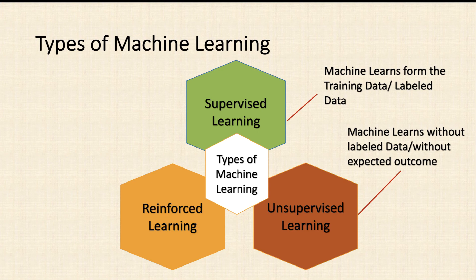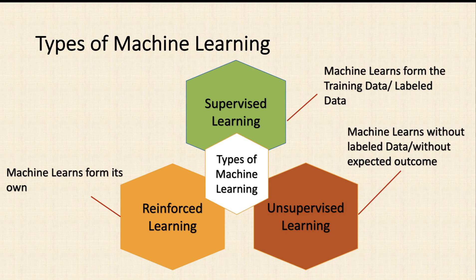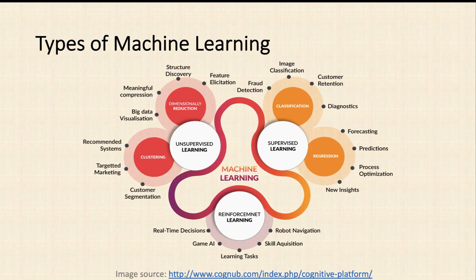The third type is reinforcement learning, which is a very complex type of learning. Here the machine learns on its own — for example in robotics, a robot gains inputs and gets trained based on them. Automatic cars, gaming applications — these come under reinforcement learning. These are the main three categories of machine learning algorithms. Now let's dig into each algorithm in detail.